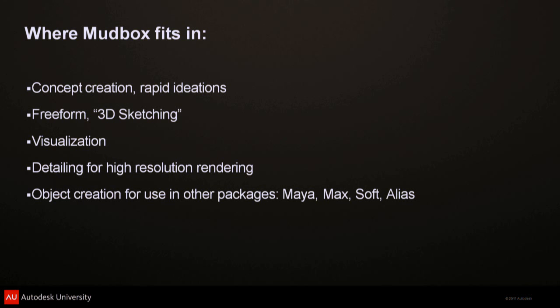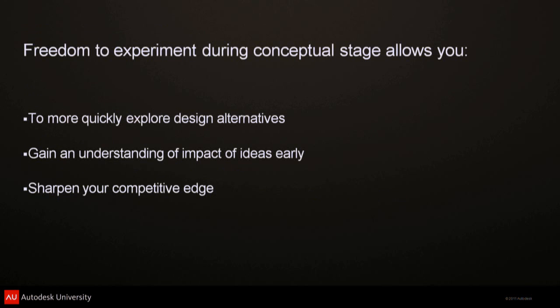You can grab base meshes from the Mudbox community or use the default primitives within Mudbox. Mudbox also has a very strong connection with any external 3D package — specifically Maya, Max, and Softimage. All of the modeling tools work very well back and forth, live with Mudbox. And now with Alias, you can take your geometry and bring it in to use as a reference or building platform for a product, for example.